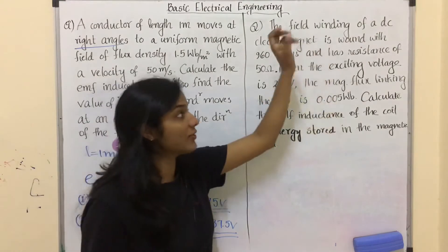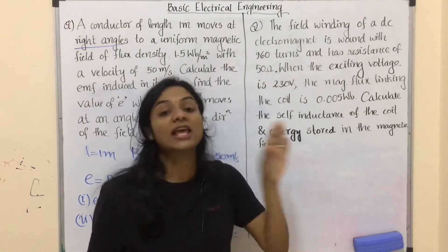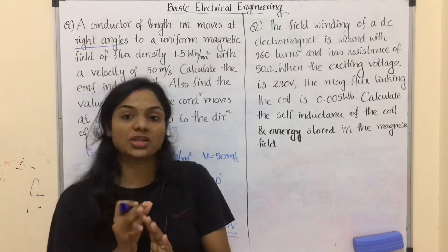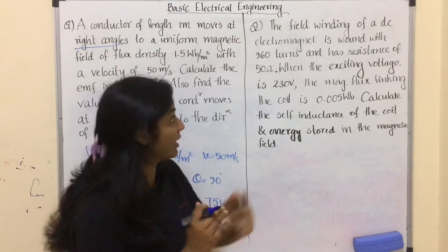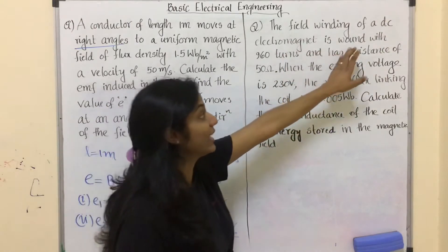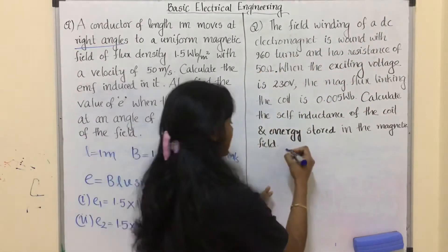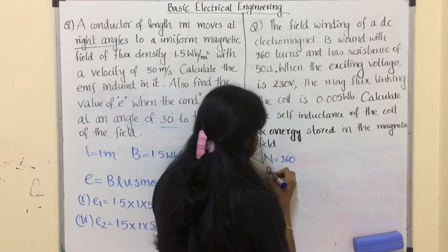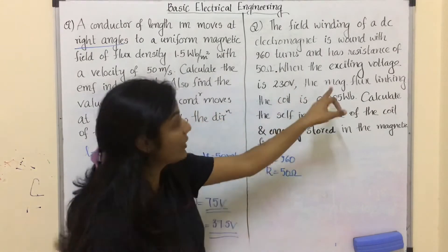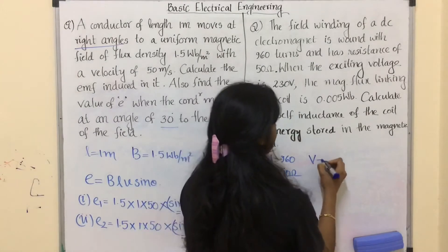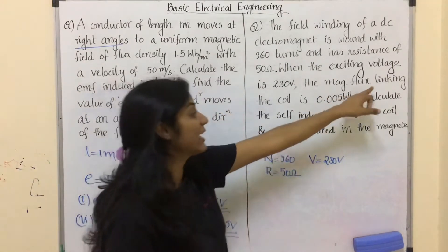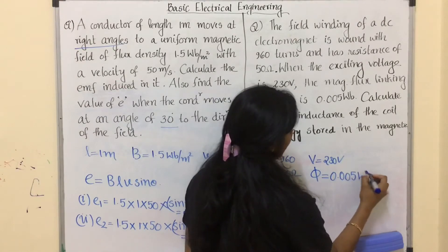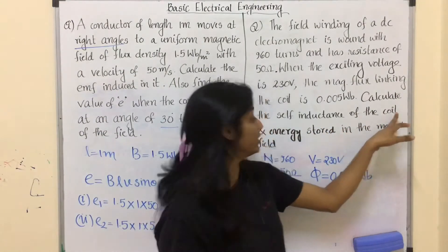Now the next question is an example for statically induced EMF, where the EMF is induced because of the change in magnetic flux. The question is: the field winding of a DC electromagnet is wound with 960 turns, has a resistance of 50 ohm. When the exciting voltage is 230 volts, the magnetic flux linking the coil is phi equal to 0.005 weber. Calculate the self-inductance of the coil and energy stored in the magnetic field.